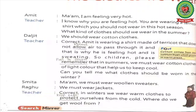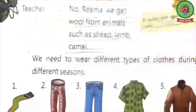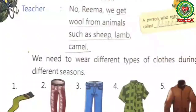Where do we get wool from? Teacher asked where we get wool from. Rima: We make wool. Teacher: No, Rima, we get wool from animals such as sheep, lamb, and camel. We get wool from animals like sheep, lamb, and camel. We need to wear different types of clothes during different seasons.